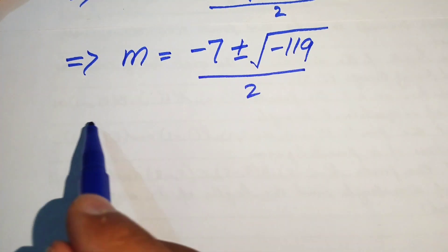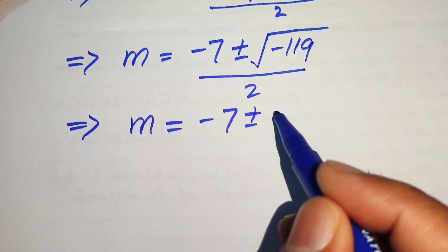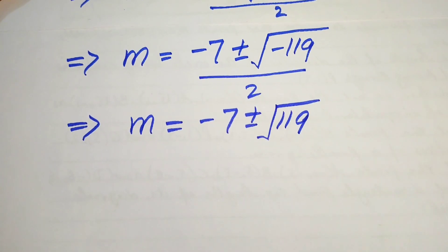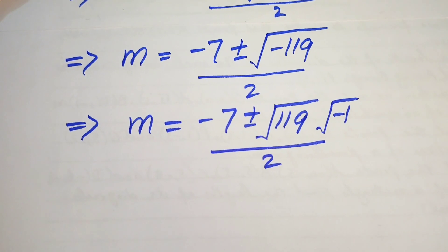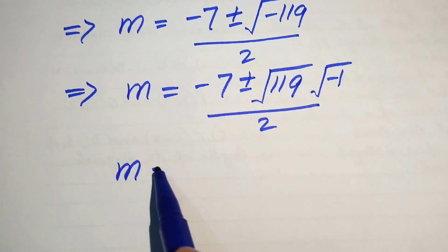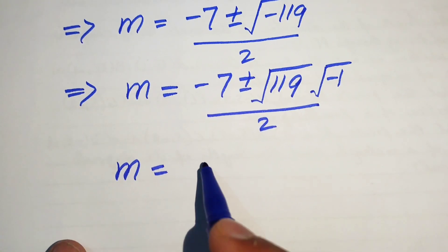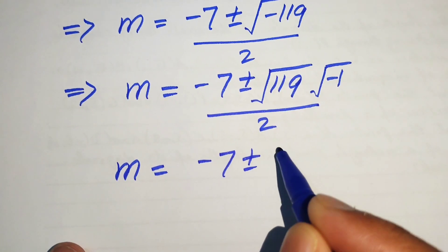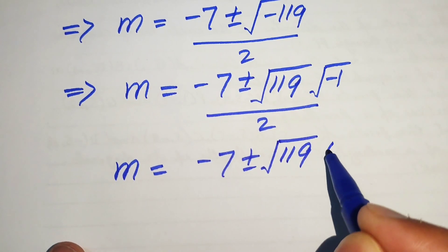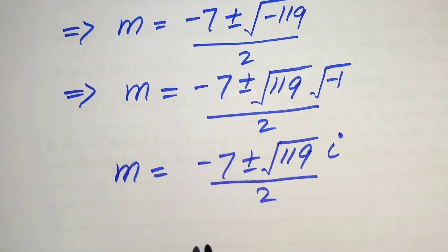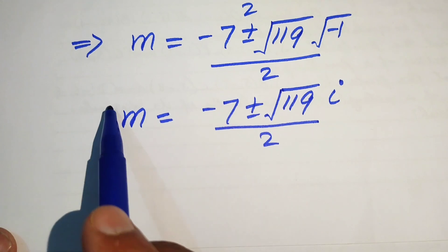We separate the square root: √(−119) = √119 · √(−1). Since √(−1) = i (iota), we get m = (−7 ± √119 · i) / 2. These are the two complex roots of the given equation.